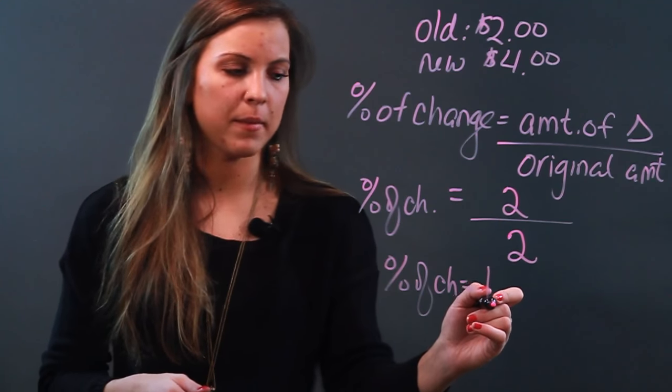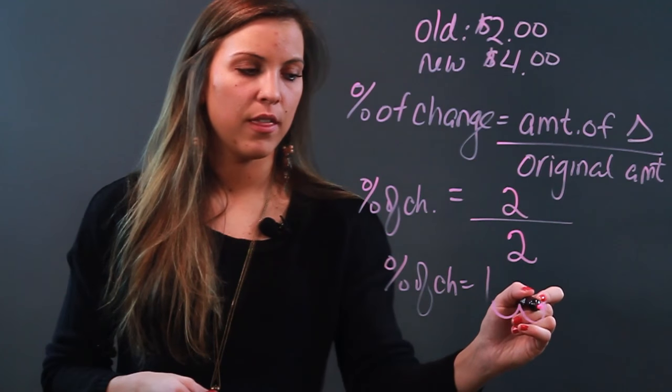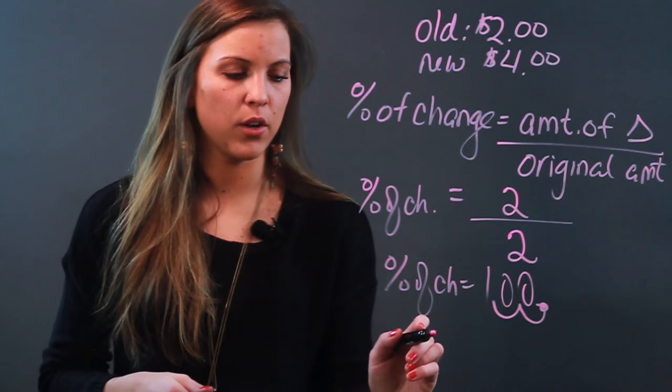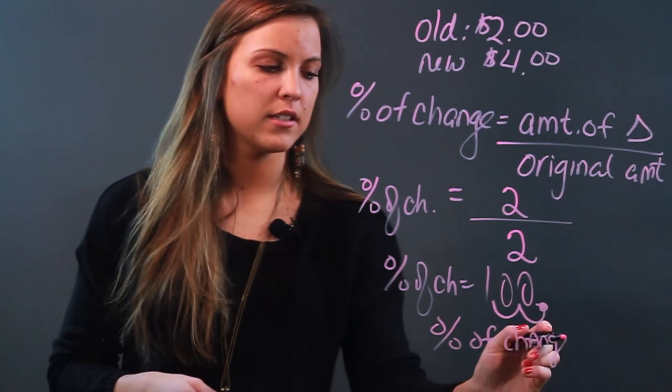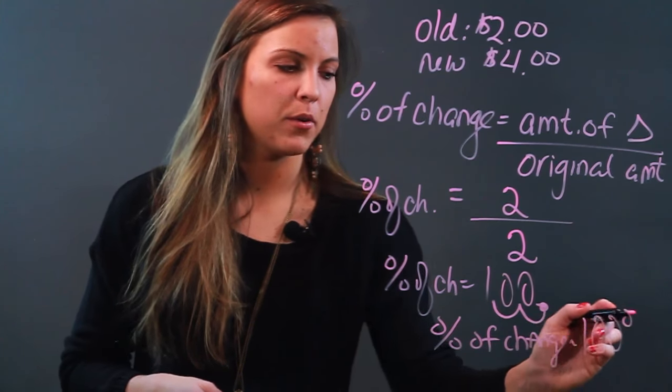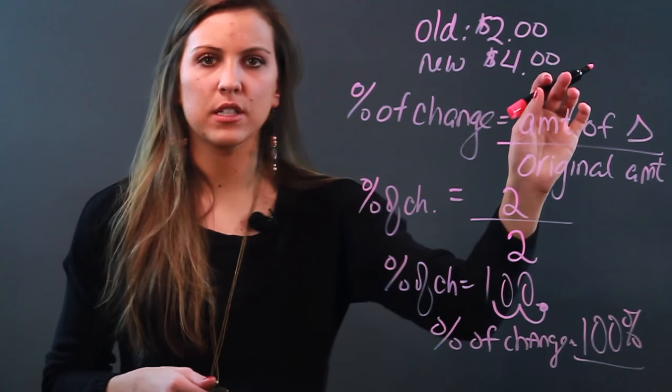So my imaginary decimal's here, I'm going to go one two, that's my new decimal. I'm filling in empty spaces with zero, that means that my percent of change is 100 percent. So from two dollars to four dollars there was a 100 percent increase.